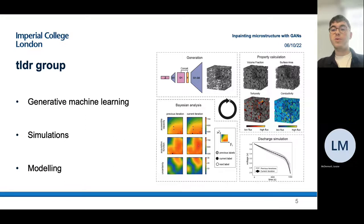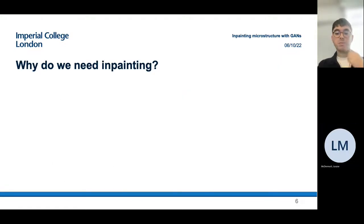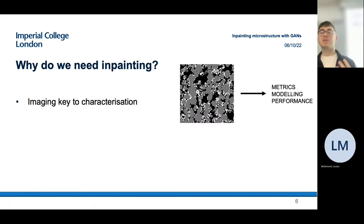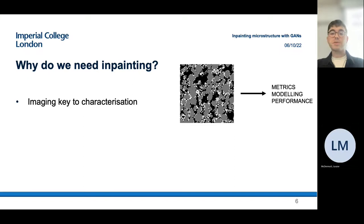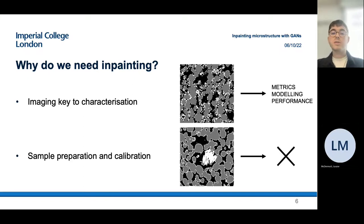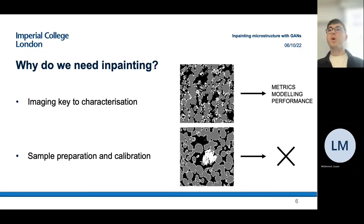So my talk today is about inpainting. A large part of the optimization and design process involves imaging materials — that's how we characterize them, extract information, and do our modeling. The techniques we use to image materials can be quite sensitive to defects and bad sample preparation, which leads to unusable parts of an image. These mess up our calculations and reduce how representative our modeling is.